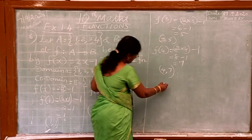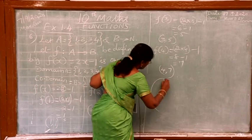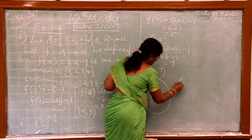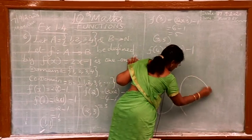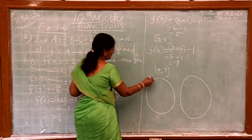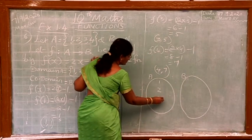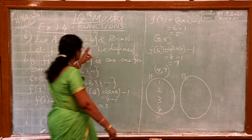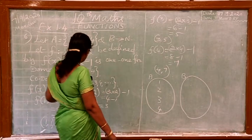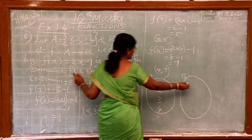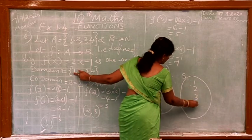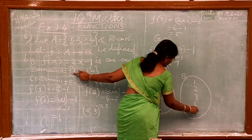You can write it as an arrow diagram. See, in domain 1, 2, 3, 4, four domain elements. In codomain 1, 2, 3, 4, 5, etc. right there, clear.